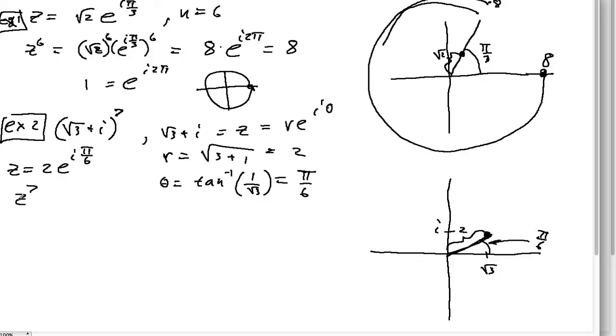Now we want z to the seventh power. That's 2^7 times e^{i·7π/6}, which gives 128·e^{i·7π/6}.